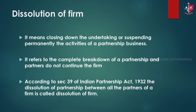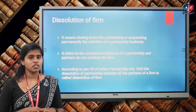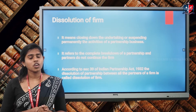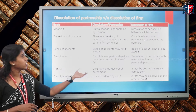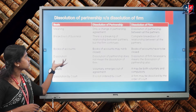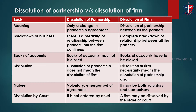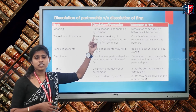For example, if ABC Limited is a partnership formed under the Partnership Act of 1932 and intends dissolution of firm, then ABC Limited ceases its operations completely. On the basis of meaning: under dissolution of partnership, there is only a change in the partnership agreement — a change in terms and conditions between the partners or a change in the profit sharing ratio. This comes under the category of dissolution of partnership.